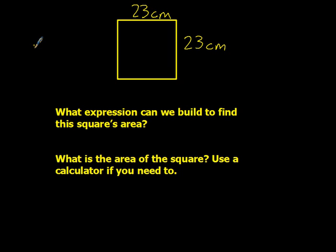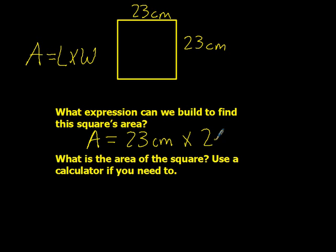And you may recall the formula for area is area equals the length times the width. Well, in a square, the length and the width are equal to one another, so our expression that we could write is area equals 23 centimeters times 23 centimeters. So at this point, grab yourself a calculator, pause the video, and we'll see if we can figure out the area of this square.